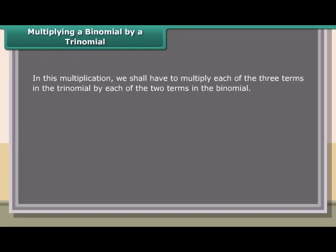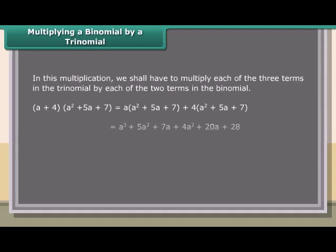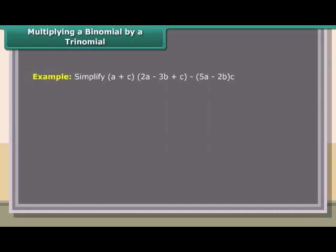Multiplying a binomial by a trinomial: in this multiplication, we multiply each of the three terms in the trinomial by each of the two terms in the binomial. (a plus 4) into (a² plus 5a plus 7) equals a into (a² plus 5a plus 7) plus 4 into (a² plus 5a plus 7), which equals a³ plus 5a² plus 7a plus 4a² plus 20a plus 28, which equals a³ plus 9a² plus 27a plus 28.